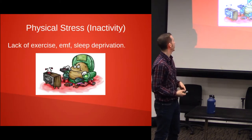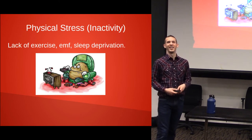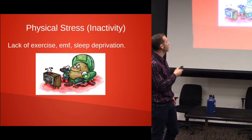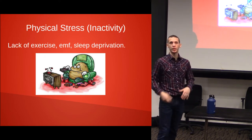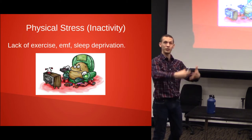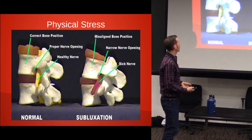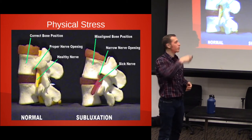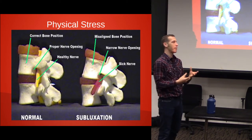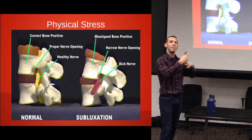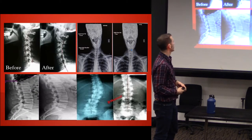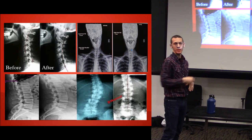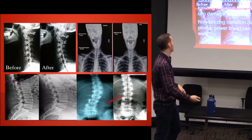One of the ways you can produce obesity is lack of exercise. Electromagnetic frequencies are another type of physical stress, and sleep deprivation is also associated with this. These are all stressors to the system. More physical stress: misalignments of the vertebrae can produce inflammatory processes — you can actually get systemic or localized inflammation due to misaligned vertebrae. Chiropractic realigning of the spine can bring inflammation down significantly, and that's been measured many times.